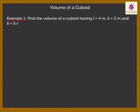Let us solve an example. Find the volume of a cuboid having length 4 meters, breadth 2 meters and height 6 meters.